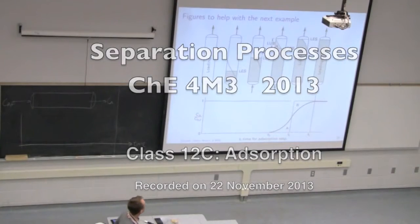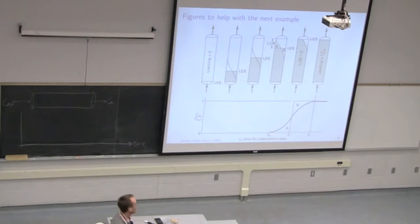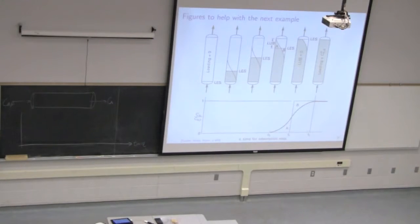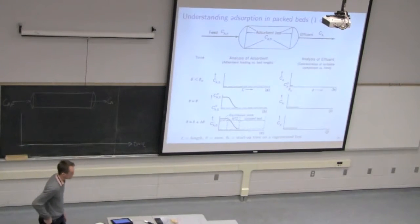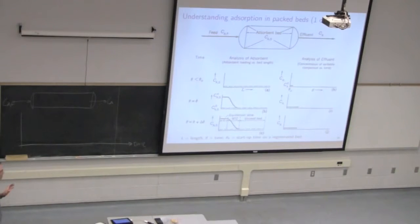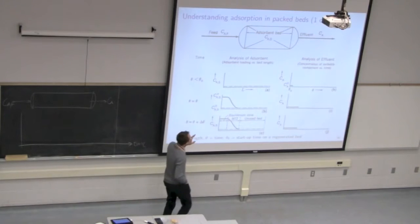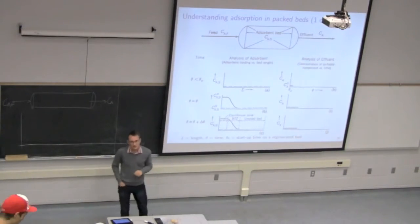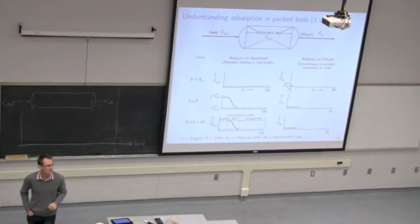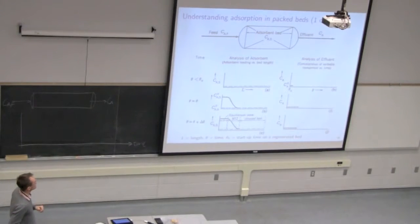In yesterday's class we were looking at the profiles through the packed bed at various points in time, as well as looking at it from the perspective of the distance between the packed bed and the length. We have this dual approach. The plots on the left are for the length through the reactor, and they're considering the concentration of the solid phase — that's the data for the analysis of adsorbents.